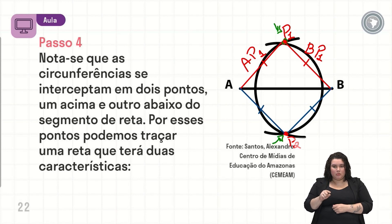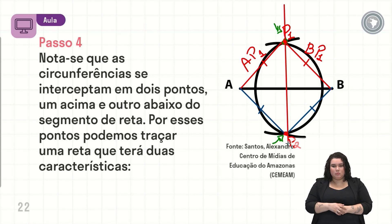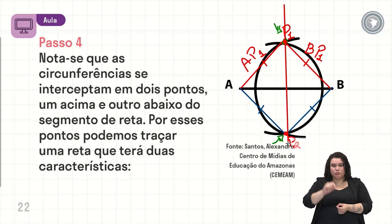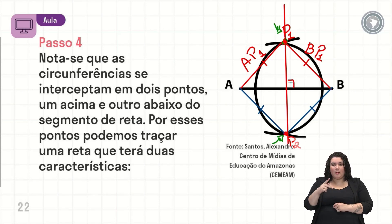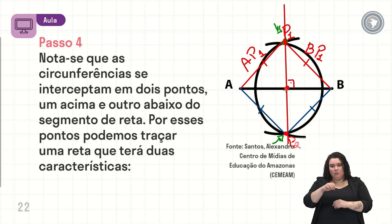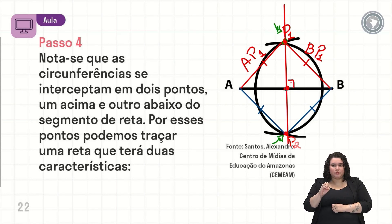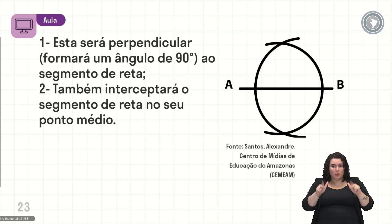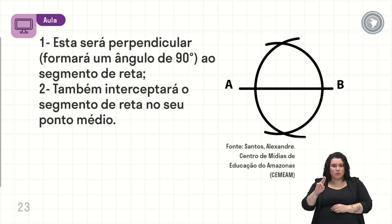Então nós vamos pegar a régua e traçar bem no meio, unindo um ponto ao outro. Com dois pontos, o que nós podemos fazer? Unindo dois pontos, nós temos uma reta. Ela vai ser perpendicular e vai estar aqui no ponto médio desse segmento. Esta será perpendicular, formará um ângulo de 90 graus ao segmento de reta, e também intersecta o segmento de reta no seu ponto médio.